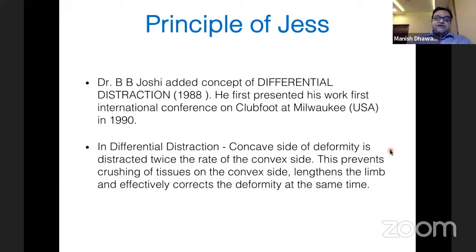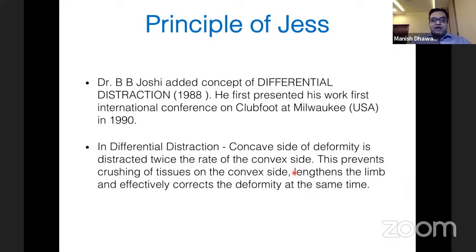In differential distraction, the concave side of the deformity is distracted more than the convex side. Distraction of the concave side more than the convex side avoids a crushing effect on the tissues of the convex side. This lengthens the limb and effectively corrects the deformity simultaneously. This is Dr. B.B. Joshi's principle, which differs from Professor Ilizarov's concept.